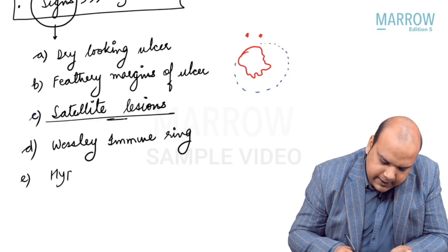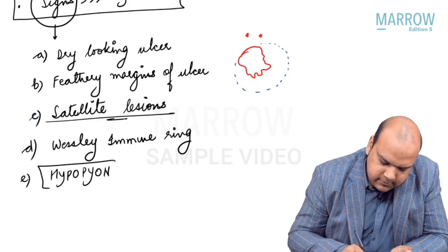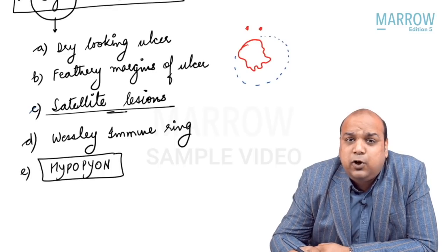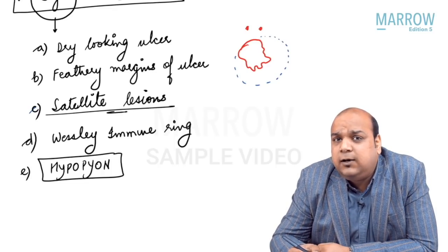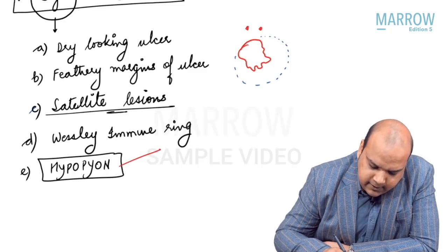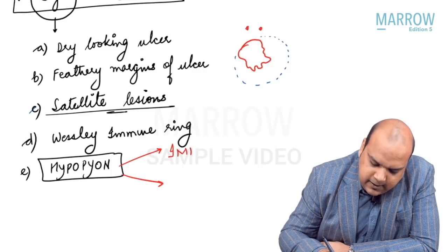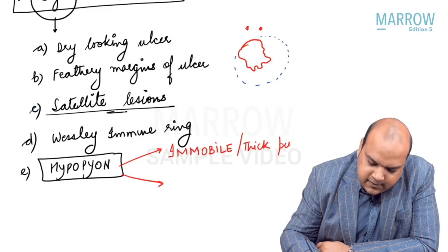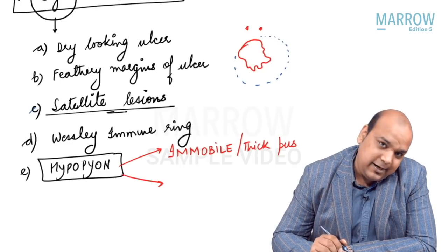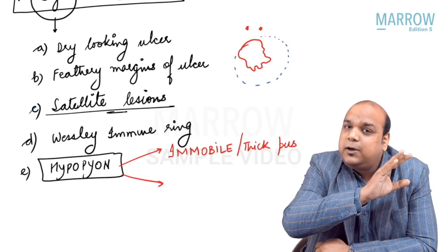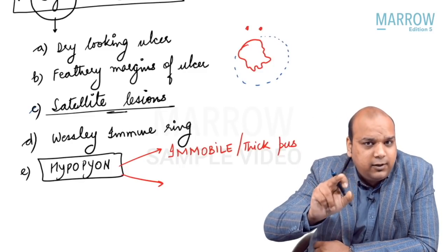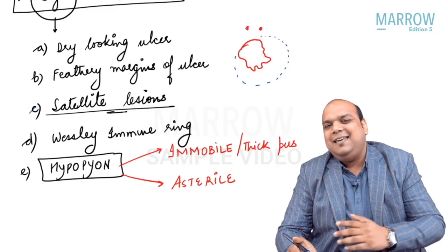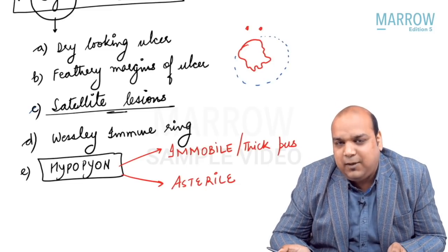The last sign is hypopion — pus in the anterior chamber. How do you differentiate a hypopion of bacterial corneal ulcer from a fungal one? In bacterial corneal ulcer the hypopion was mobile, but in fungal corneal ulcer it is immobile — the pus is thick. If you move your head left or right, the hypopion will not move; it is almost stuck at the inferior portion of the cornea.